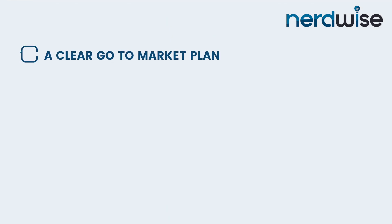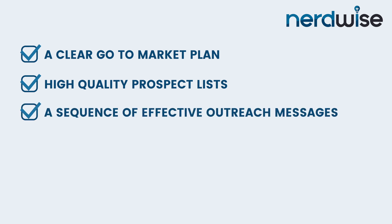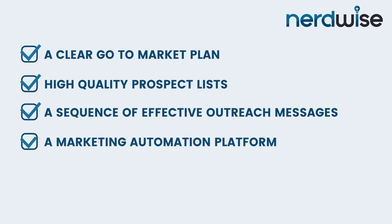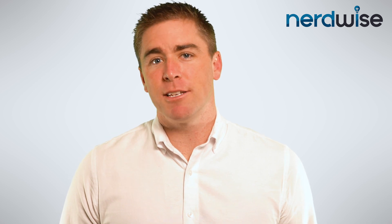Let's first cover what an automated prospecting system entails and the items you'll need to get one up and running for your sales team. The idea behind automating prospecting activities is to increase the overall output and lead flow generated by your sales team. To do this effectively, you'll need a clear go-to-market plan, high-quality prospect lists that match your plan, a sequence of effective outreach messages to engage your prospects, a marketing automation platform that connects with the Outlook or Gmail accounts of your sales team, and a method for scoring the top engaged prospects to enable your sales reps to follow through on the most qualified prospects. With these items in place, you can assemble an automated prospecting system. Let's dive into each with a few best practices.